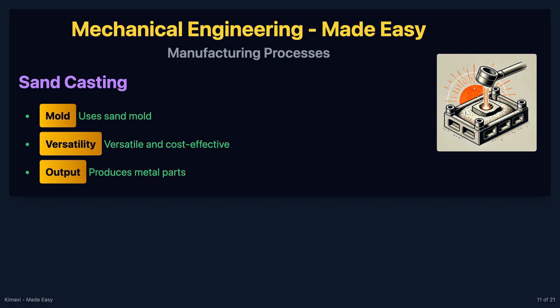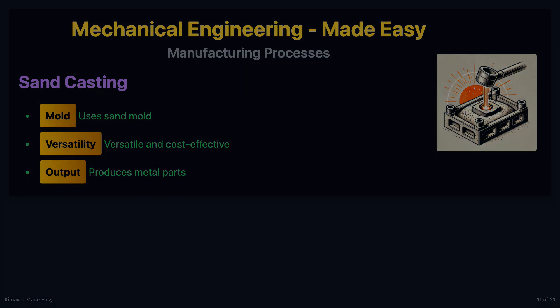In sand casting, a sand mold is used to form the desired shape. It is a versatile and cost-effective method for producing metal parts.